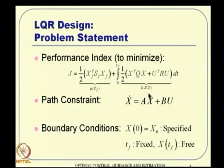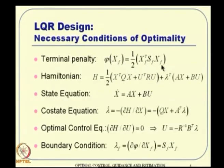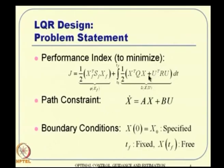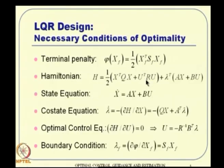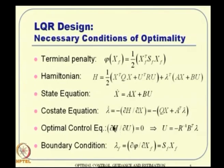We defined phi(X_f) and the Hamiltonian H = L + lambda transpose F, where L is the running cost and F = AX + BU. Applying the necessary conditions of optimality: the state equation gives X-dot = AX + BU; the costate equation gives lambda-dot = -QX - A transpose lambda; and the optimal control equation from del H / del U = 0 gives U = -R inverse B transpose lambda.